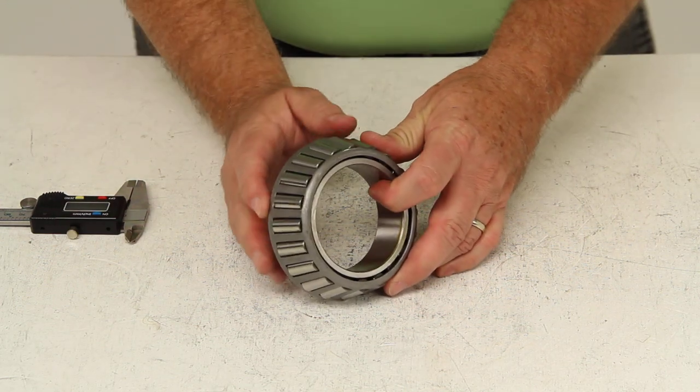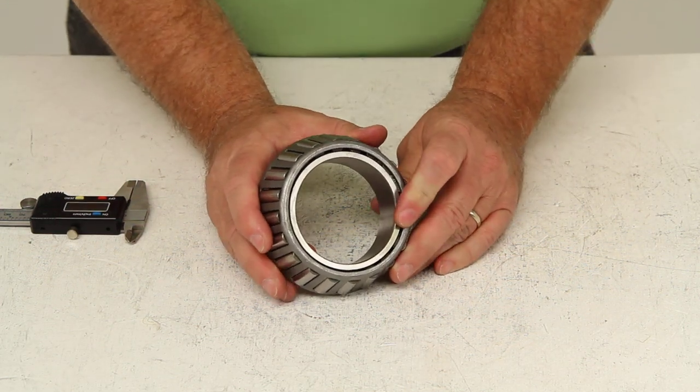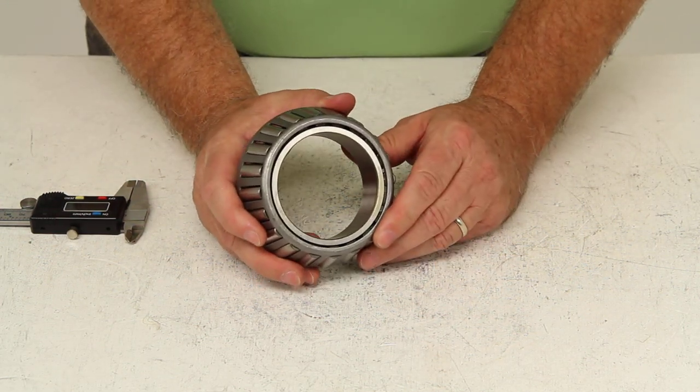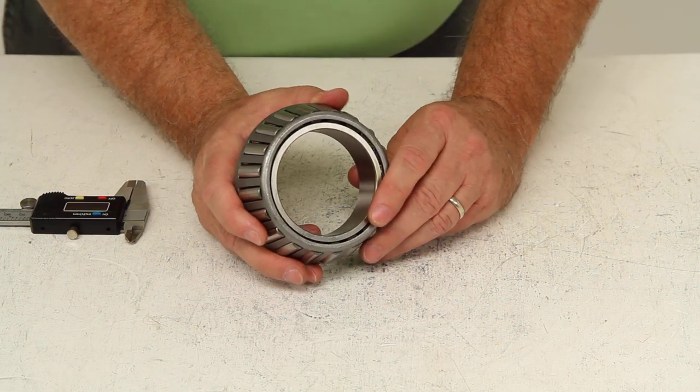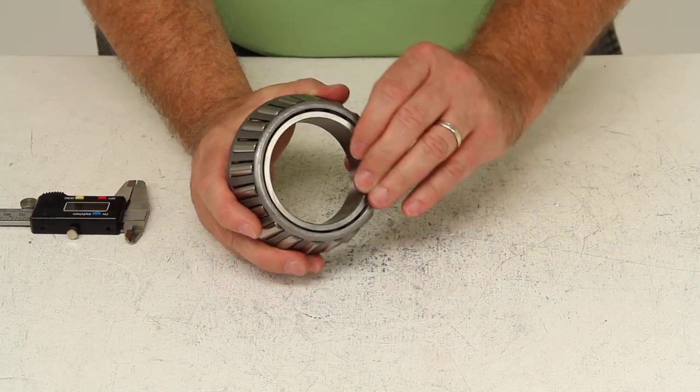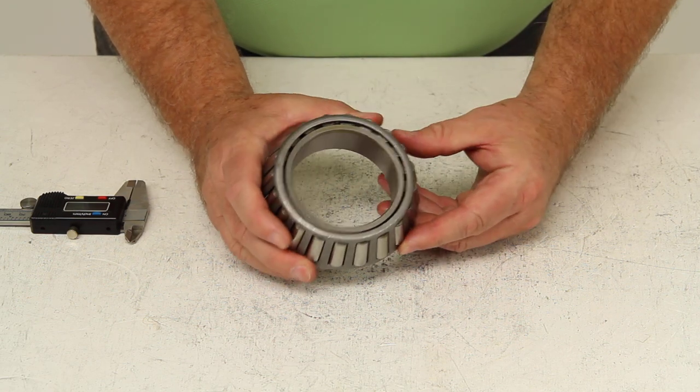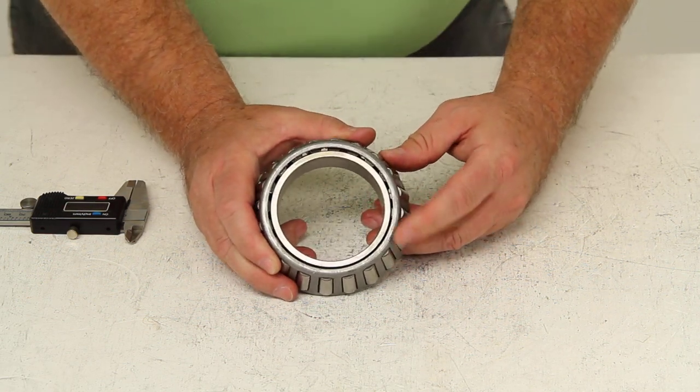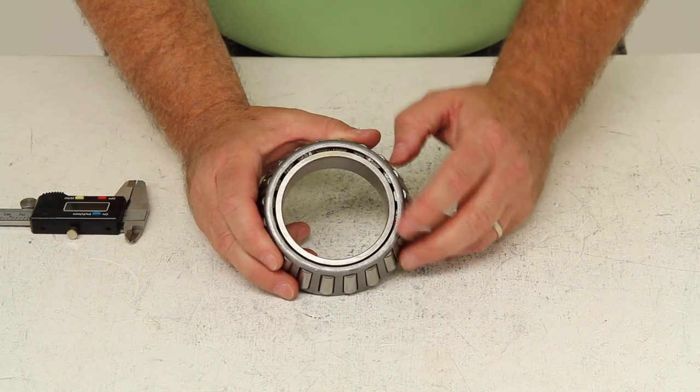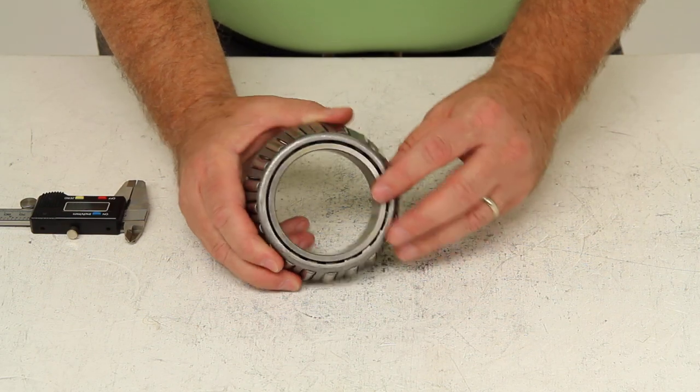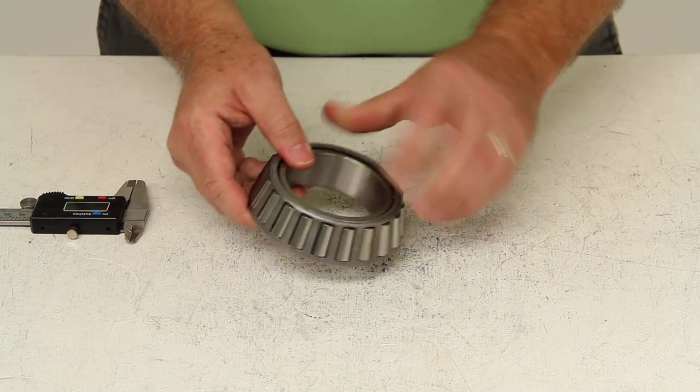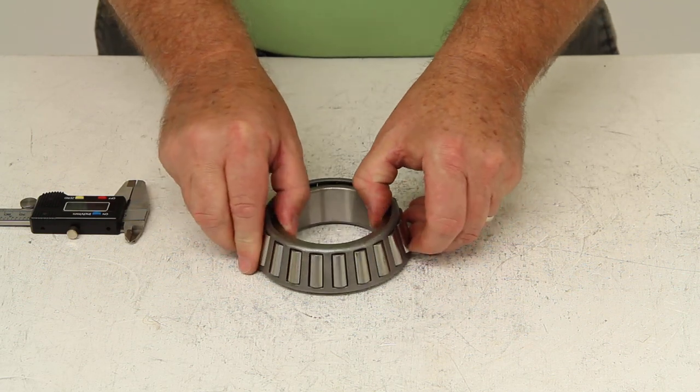This bearing is made to use with a bearing race, which is not included and is sold separately. The bearing race would be part number 3920, and the critical measurement on the bearing race would be the outer diameter, which is 4.438 inches. That should do it for the review on part number 3984.